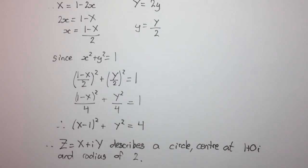So that's the final answer. We've shown that if little z describes a unit circle, then capital Z describes another circle. So thanks for watching.